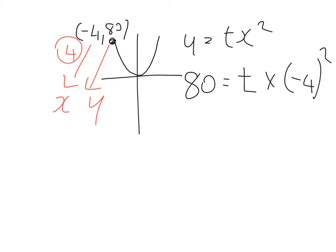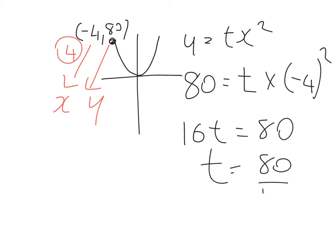(-4) squared — be careful — that's 16. So 16t equals 80. t equals 80 over 16 — take your time, 16 fits into 80 five times — t is equal to 5.